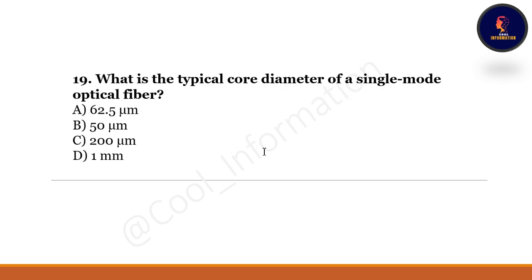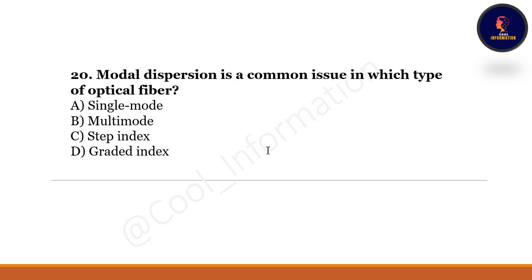Question 19: What is the typical core diameter of a single mode optical fiber — is it 62.5 micrometers, 50 micrometers, 200 micrometers, or 1 mm? The correct option is 50 micrometers.